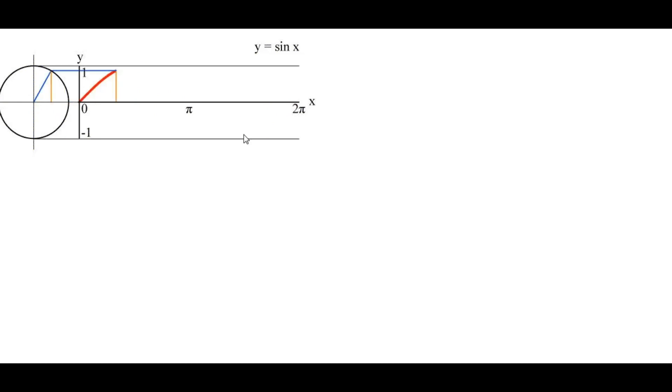When x is equal to 3 pi over 2, sine is negative 1. At 0, pi, and 2 pi, there is no height for this triangle. And so sine is 0, 0, and 0.